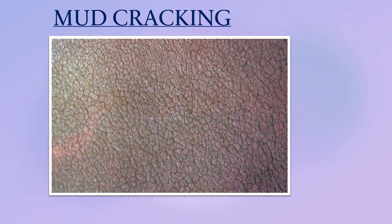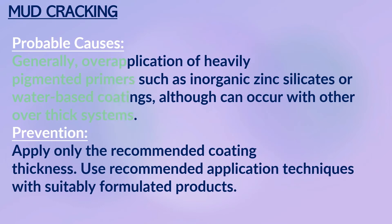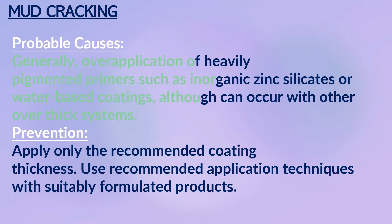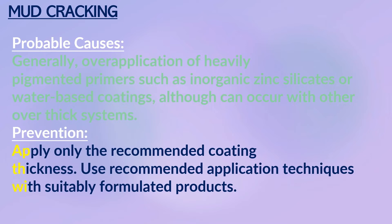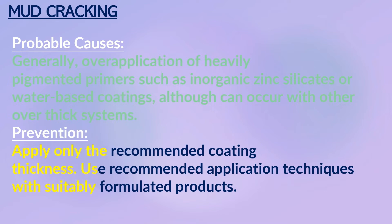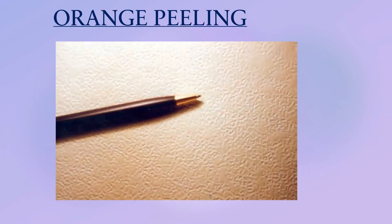Mud Cracking: the dried paint film has the appearance of a dried-out mud flat. The cracks appear as a network that can vary in size and amount. Probable causes: generally over-application of heavily pigmented primers such as inorganic zinc silicates or water-based coatings, although can occur with other over-thick systems. Prevention: apply only the recommended coating thickness and use recommended application techniques with suitably formulated products.